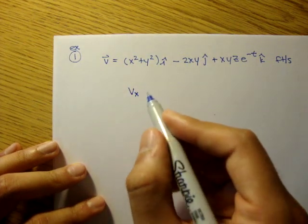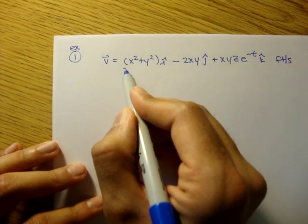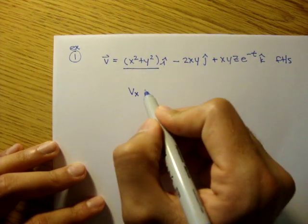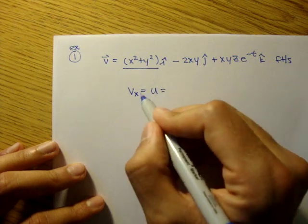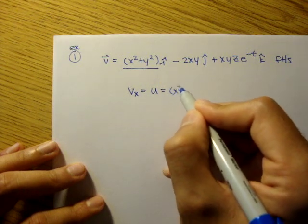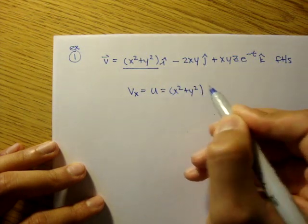So, to find our x component, it's just the i term. vx is equal to u, in other books, and that component is x squared plus y squared. That's it.